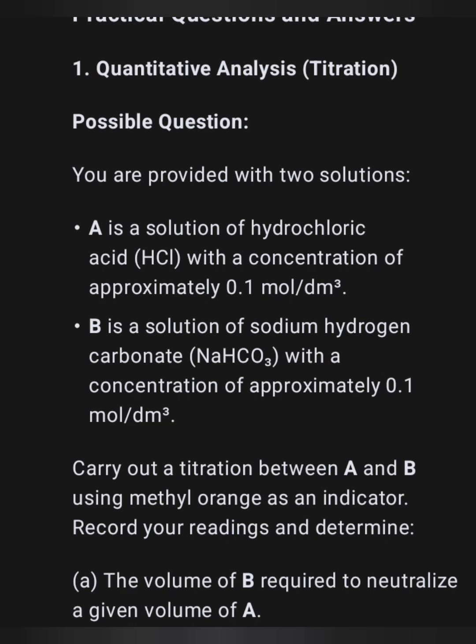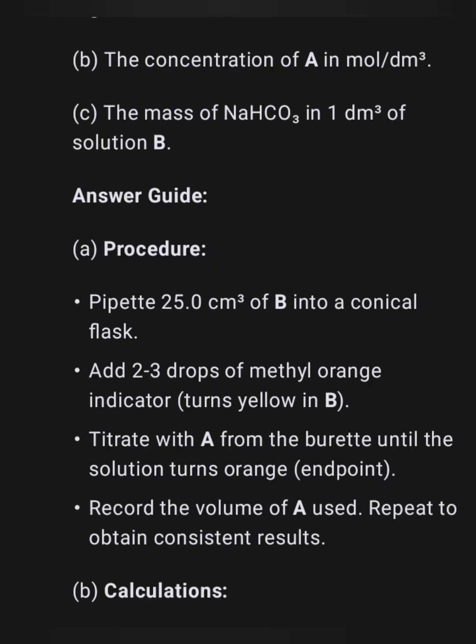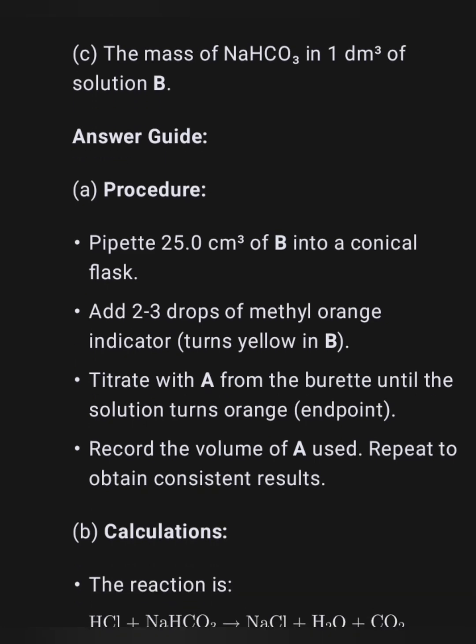I'm giving this as an example you can practise with in school. If you're registered in a public school that doesn't have practical materials, I'll give you details on how to solve everything on your own. Carry out a titration between A and B using methyl orange as an indicator. Record the readings and determine: (A) the volume of B required to neutralise a given volume of A, (B) the concentration of A in mol/dm³, and (C) the mass of sodium hydrogen carbonate in one dm³ of solution B.